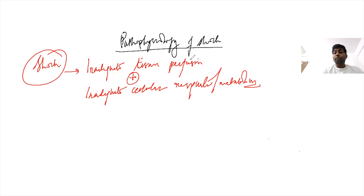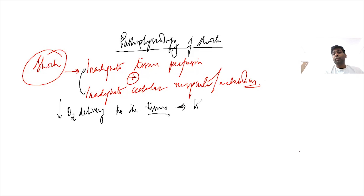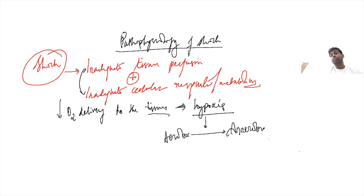In case of inadequate tissue perfusion, there is a decrease in oxygen delivery to the tissues. This leads to hypoxia in the tissues. As a result, the cellular respiration shifts from aerobic respiration to anaerobic respiration.